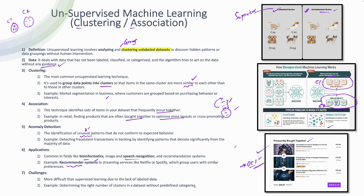Unsupervised learning does come with challenges. Compared to supervised learning, it is more difficult because in supervised learning you know the output — you have labeled data. Here the data is not labeled, making it harder. Another big challenge is determining the right number of clusters in a dataset without predefined categories. With a simple cat-and-dog example it's easy to form two clusters, but with a large variety of data it becomes a real problem — how many clusters do you create without even knowing what categories exist?